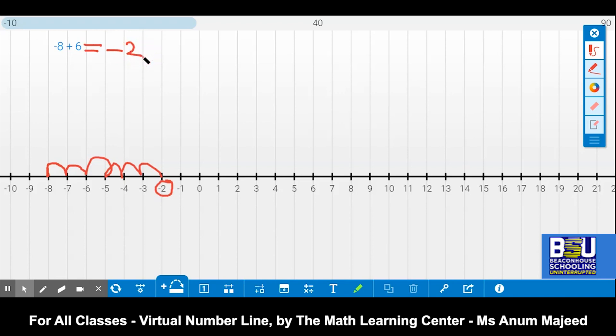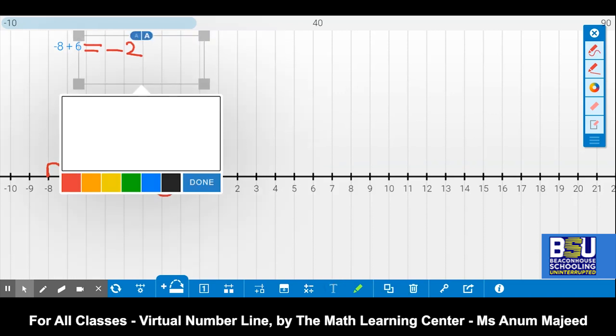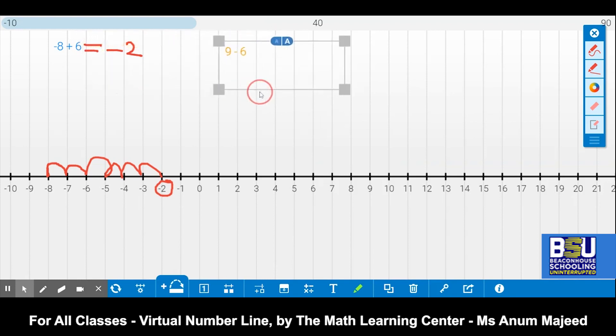Let's do another example. I can also change the equation. Let's write another equation. Now I am going to start from a positive number, let's say 9. And then I have to move in the negative numbers, that means 9 minus 6. I can also change the color of the writing. This is such an amazing resource which will be very useful in online lessons. As we know, since in this pandemic most of us are having online classes, this is a very effective resource. Now I have 9 minus 6, which means my starting point is 9 and I have to jump back 6 times.